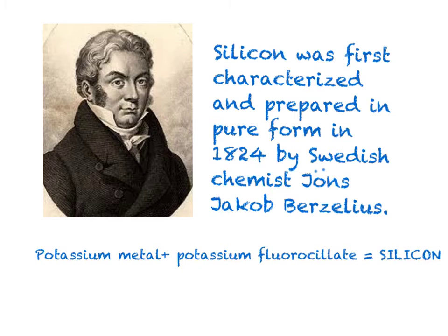Kanish has another question. Can you tell me who discovered silicon and when? Silicon was first characterized and prepared in pure form in 1824 by Swedish chemist John Jacob Berzelius. He was the first to isolate silicon by using potassium metal and potassium fluorosilicate, which, of course, contain silicon.